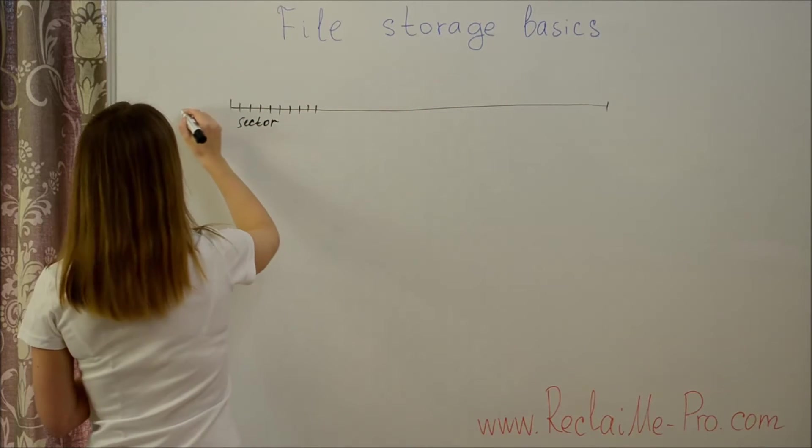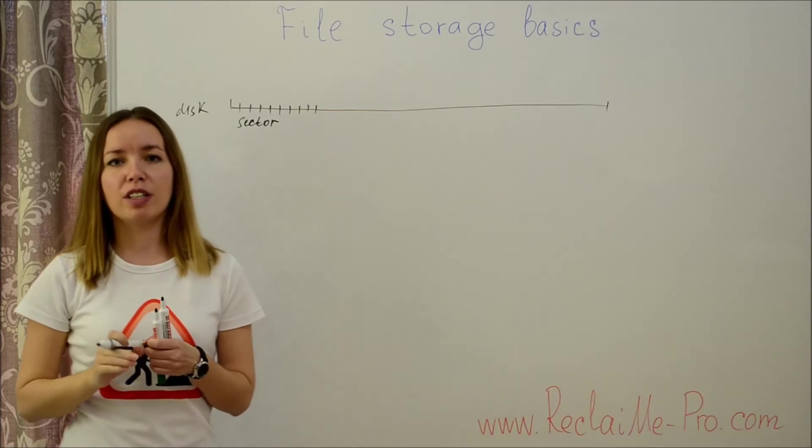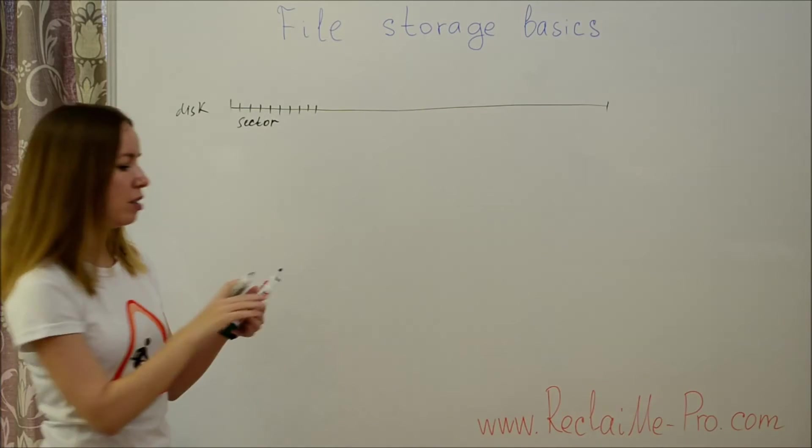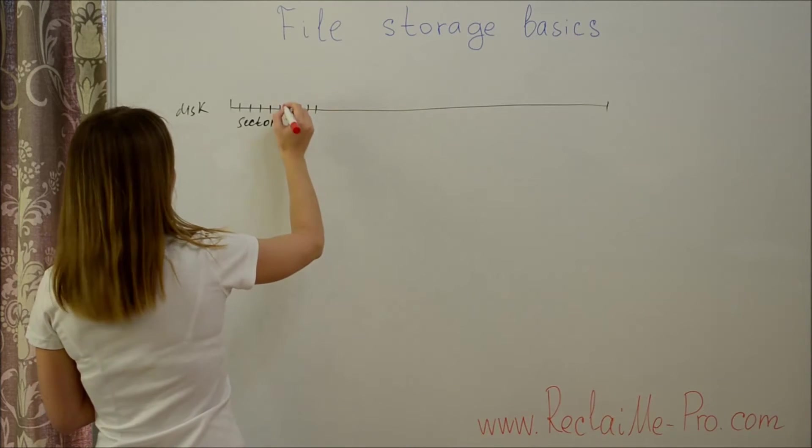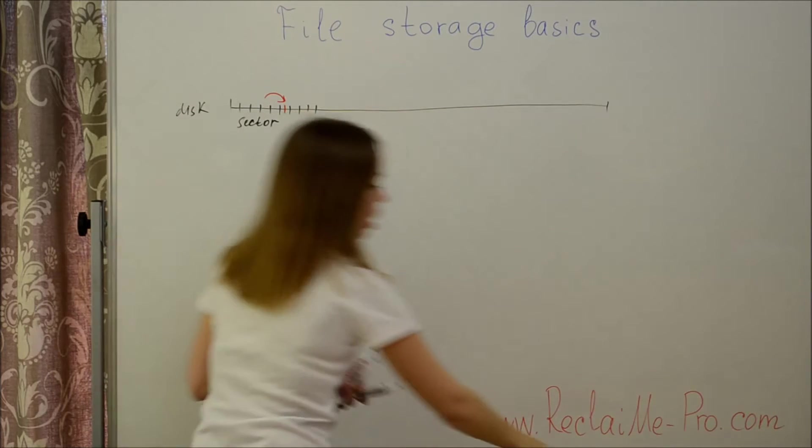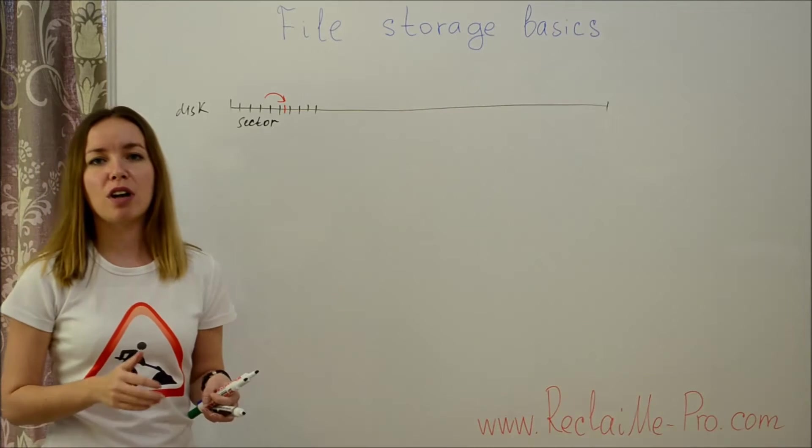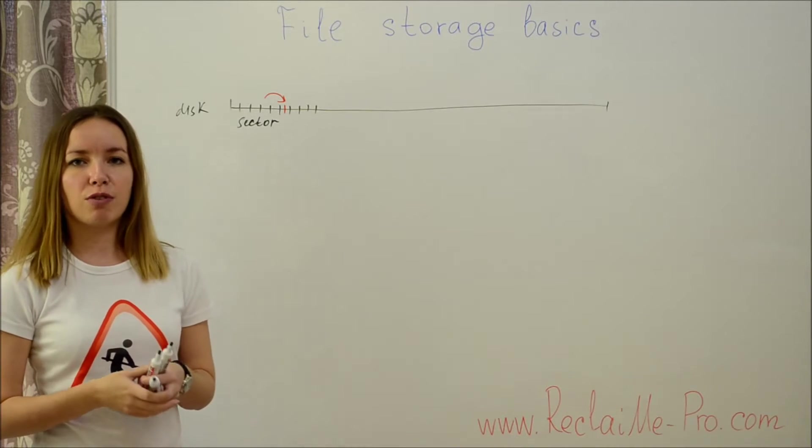Thus, a physical disk cannot write or read data from an arbitrary location, for example from the middle of the sector, or in a chunk of arbitrary length. For example, you can't read half of a sector.